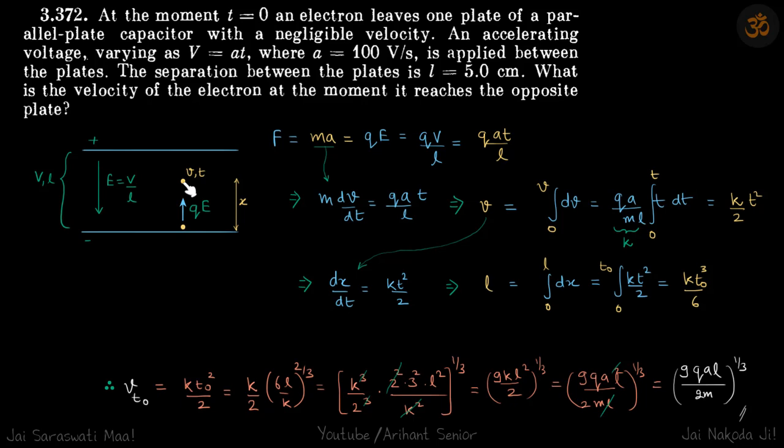Let's say when it's in between somewhere, at time T its velocity is V and it is at distance X from this plate. Now force equals MA equals QE equals QV by L, and V potential is time-varying so it is at.